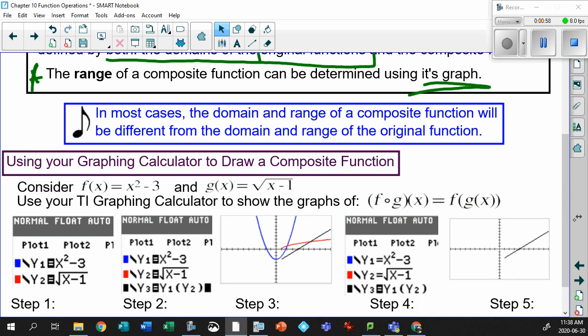In most cases, the domain and range of composite functions will be different from the domain and range of the original because you're putting functions together. Best way to do it? I'm going to use a nice little example here, but I think the easiest way to do it is still using your graphing calculator. Consider these two functions: f(x) = x² - 3 and g(x) = √(x - 1).